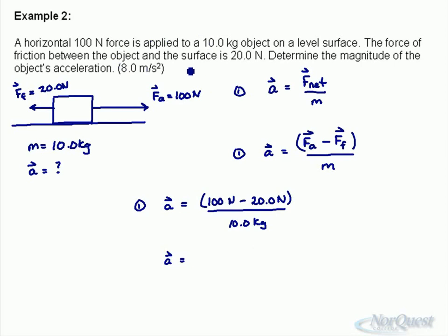And again, we check back to our question here. I have three sig digs in the question. Actually, my answer should be written a little bit more properly. It should be written as 8.00 meters per second squared. I don't have the right number of sig digs in the solution in brackets here. I should be going to three significant digits in this question.